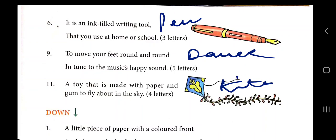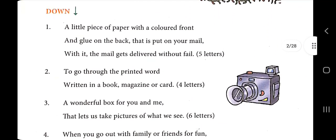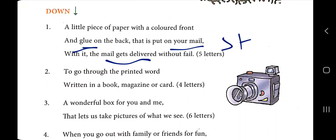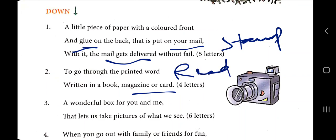The clue and picture are given. A little piece of paper with a colorful front and gum on the back that is put on your mail to get it delivered without fail — that is 'stamp'. To go to the printed word written in a book, magazine, or card — you 'read' it. A wonderful box that lets us take a picture of what we see — that is 'camera'.